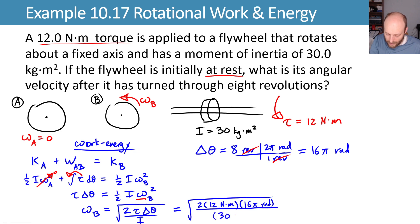Divided by our moment of inertia, 30 kilogram meters squared. Radians are a ratio, effectively unitless, and then we can divide by our kilograms and meters squared.